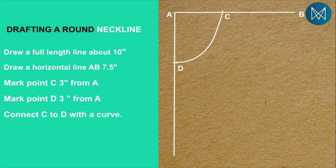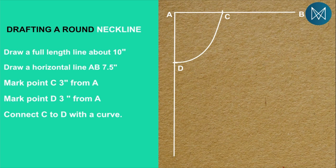This neckline is now complete. It's a very simple process - in five steps you will have accomplished drafting this round neckline. Of course, if it were a full garment you would continue to slant the shoulder, demarcate the waist, etc. But in this case we are only looking at the neckline, and at that point you will have finished drafting your neckline.